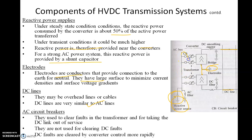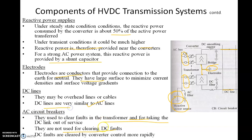AC circuit breakers are present on the AC side. They are used to clear faults in the transformer and to take the DC link out of service, but they are not used for clearing DC faults. If there is a DC fault, the AC circuit breaker is not used — instead, the converter is controlled to clear it. DC faults are cleared by converter control more rapidly by reducing the converter firing angle.